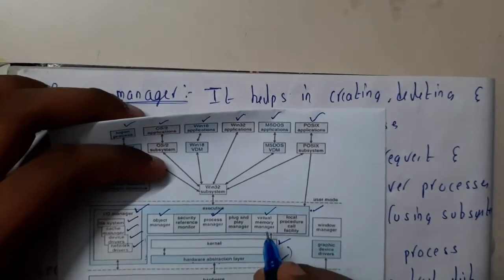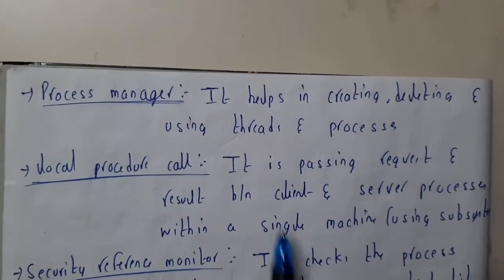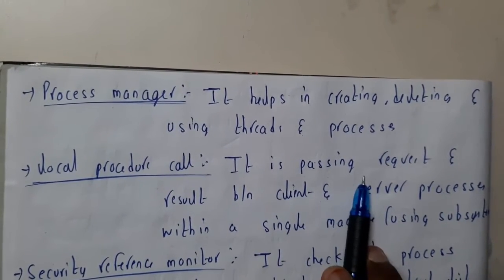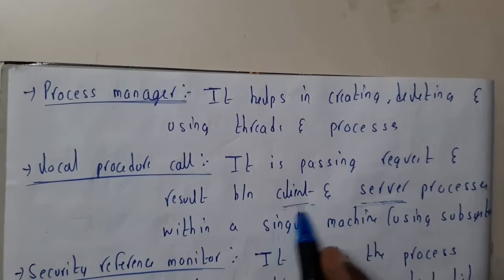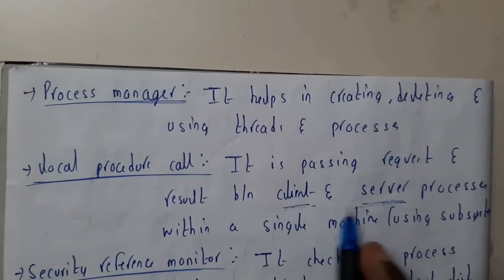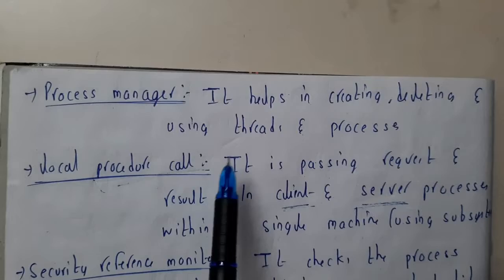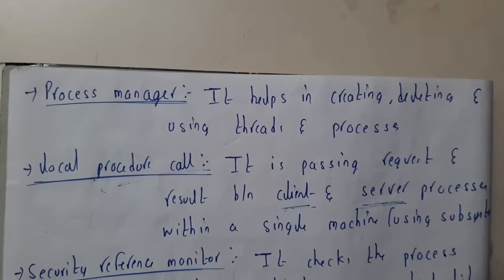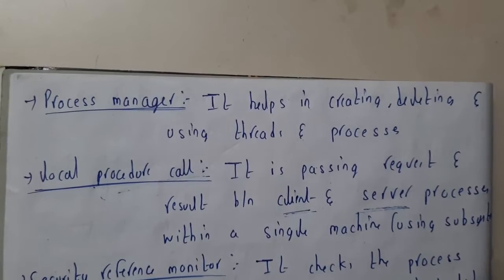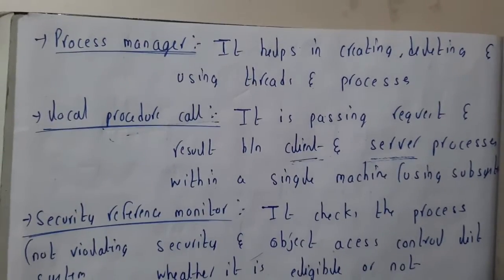Local Procedure Calls passes the requests and results between the client and server. In between devices, this is the main mechanism for transferring data. It's a simple machine subsystem in which we transfer information.